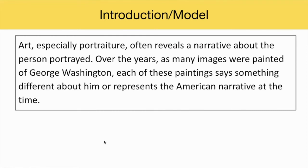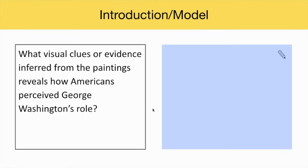Explain to students that art, especially portraiture, often reveals a narrative about the person portrayed. Over the years, as many images were painted of George Washington, each of these paintings says something different about him or represents the American narrative at the time. Have students reflect on the following question: what visual clues or evidence inferred from the paintings reveals how Americans perceive George Washington's role?